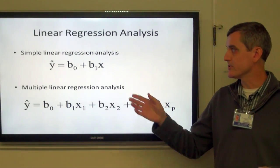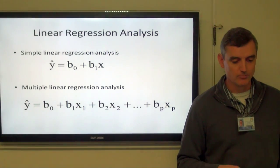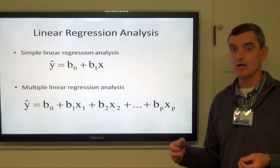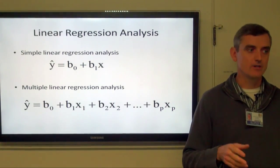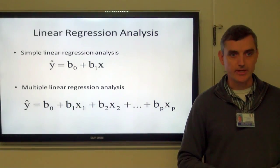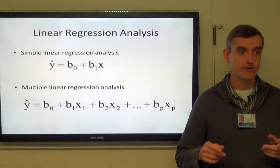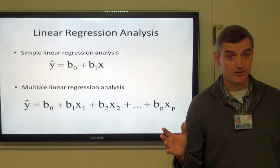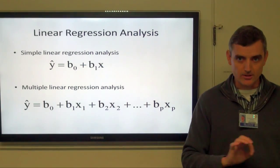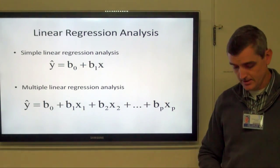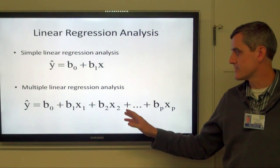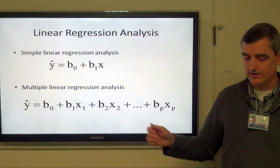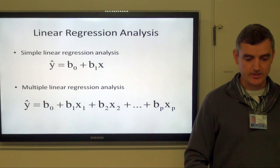We can extend this to multiple linear regression by adding multiple variables. If we think of the simple line as having a y-axis and x-axis, adding a third variable adds a z-axis going straight out at you, and you can add more variables like that. Each of these different values of b represents the change in the value of y for each one unit change in that particular variable.